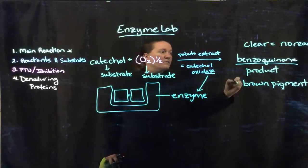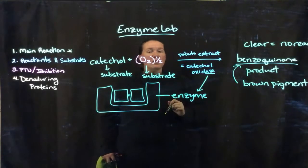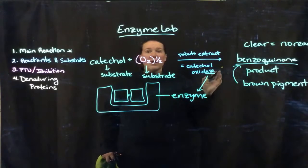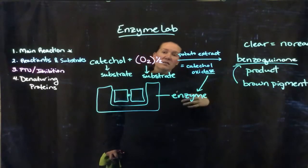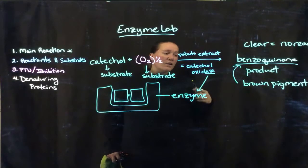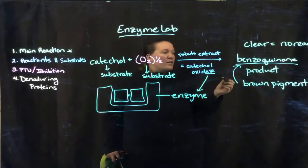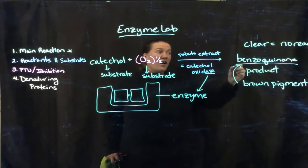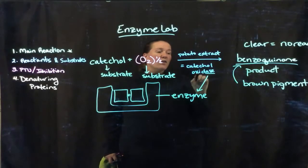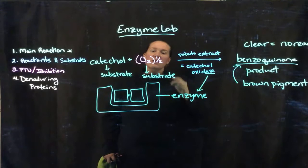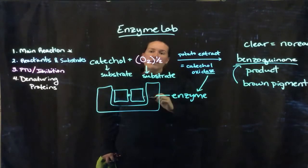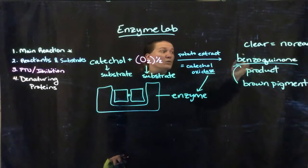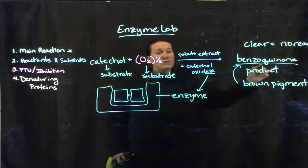Brown means that the product was produced. I know that's really confusing because a lot of times when we see brown we think it oxidized or iodine got in there, but that's really what we're testing for — the oxidation process. Catechol oxidase is an oxidation reaction: it's mixing with oxygen from the atmosphere and turning it into a completely new thing, which is benzoquinone.